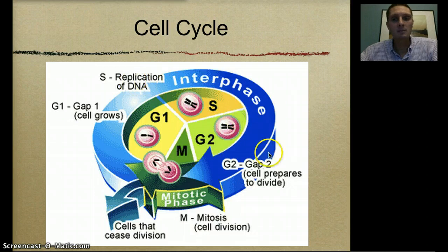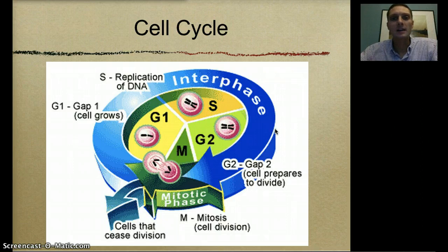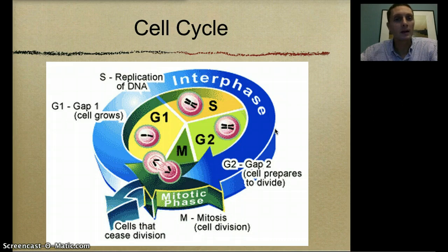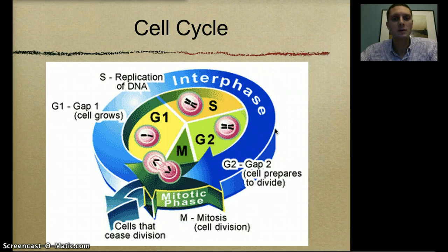The last part of interphase is G2, or GAP2, and this is where the cell is preparing to divide. In this stage, some of the last organelles are copying — such as mitochondria and chloroplasts. They're being duplicated so that our two new cells at the end of this process will have the same amount of organelles as well as DNA. The last portion of the cycle is something called the mitotic phase, or mitosis.